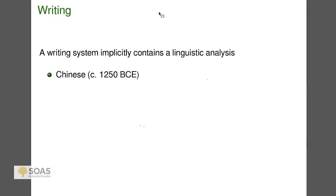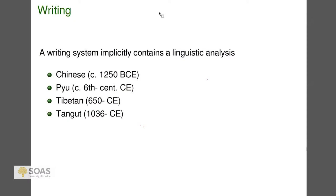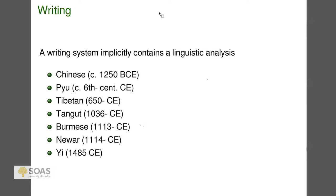Chinese from 1250 BCE has a logographic script with a syllable-based phonology. Piu, which you already saw, is kind of a segmental phonology based on a Brahmi script. Tibetan, Tangut — which is more Chinese-style script and gives even less information about pronunciation — Burmese, Newar, and Yi. That gives you a sense of the accumulation of languages with a written tradition over time, each of which has some analysis of segmental phonology and syllable structure.